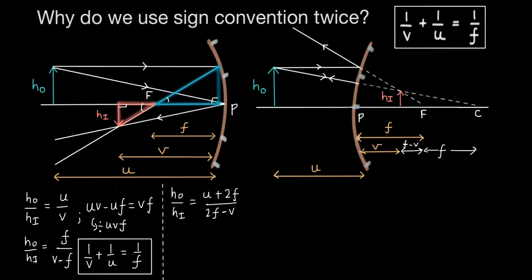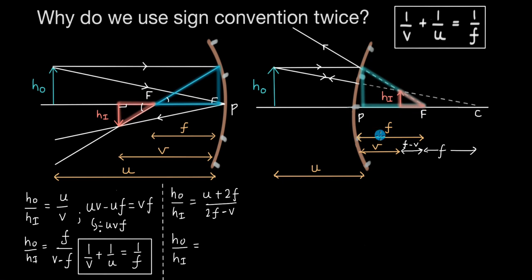For the second pair of similar triangles, if we drop a perpendicular from this point to the optical axis and call it P — assuming these two points are extremely close, just like we did for the concave mirror — the bigger blue triangle and the smaller light red triangle are similar due to 90-degree angles and a common angle. This distance equals H0. So H0/HI equals F divided by F minus V.